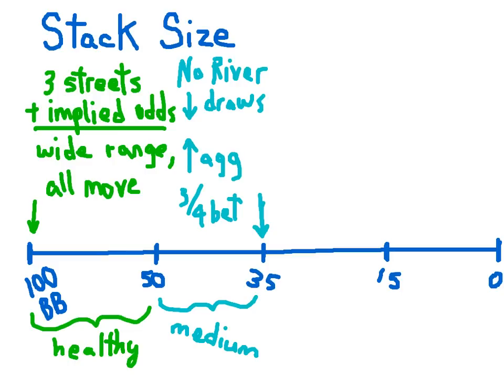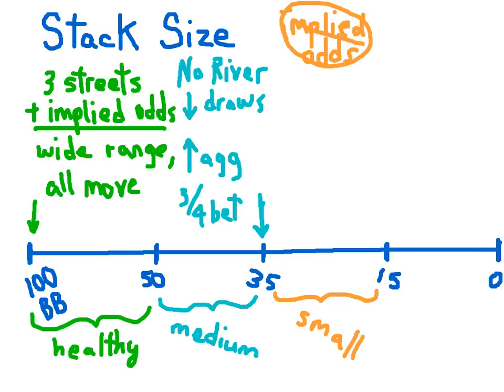If you lose some chips and fall out of the medium range, you enter a small stack range, between 15 and 35 big blinds. If you have a small stack, you no longer have implied odds and your options have become further constrained, and you can't play hands like suited connectors or small pocket pairs.